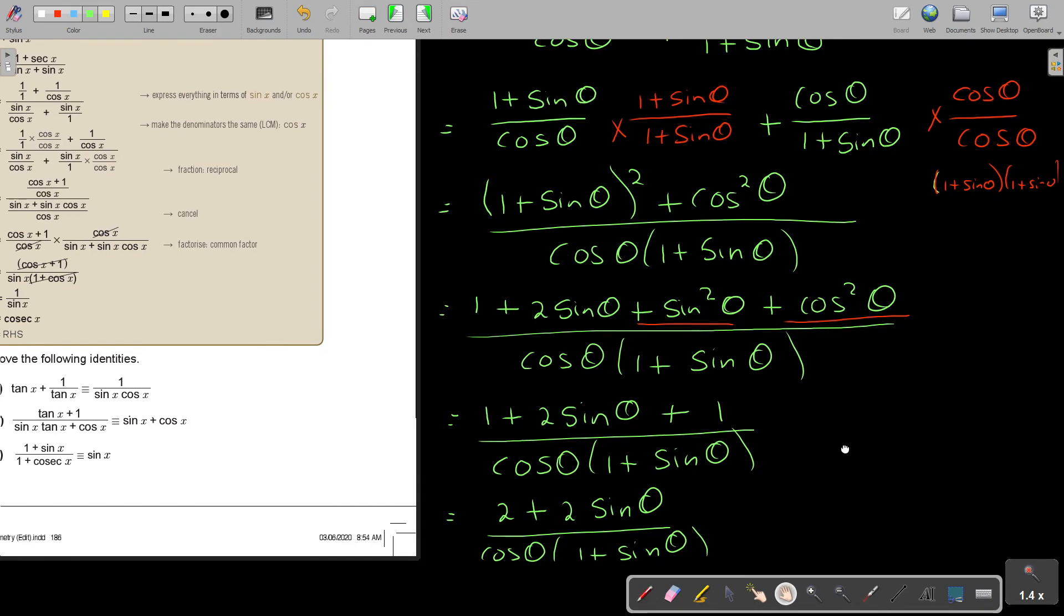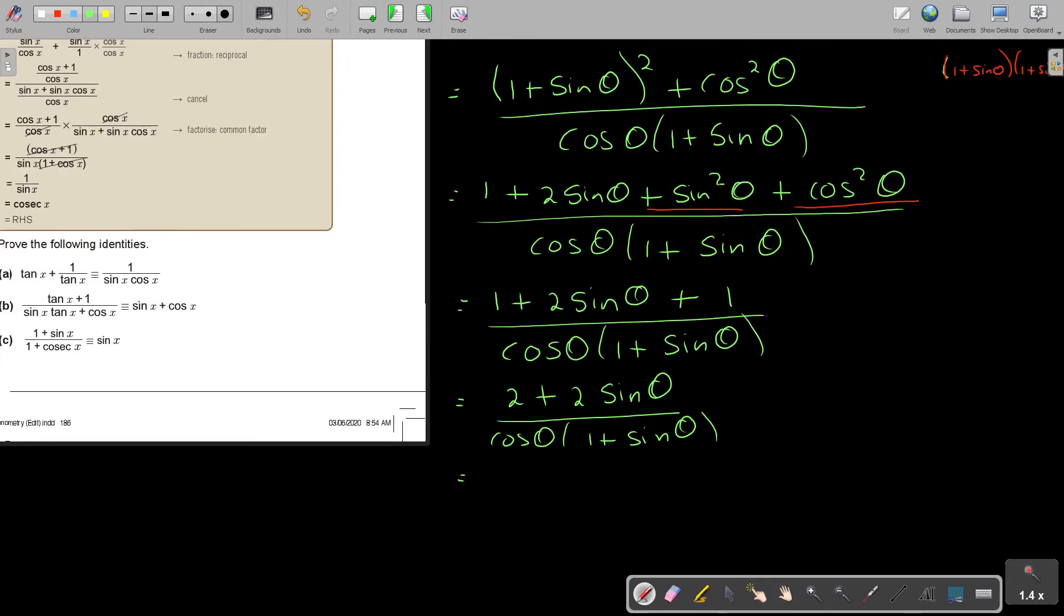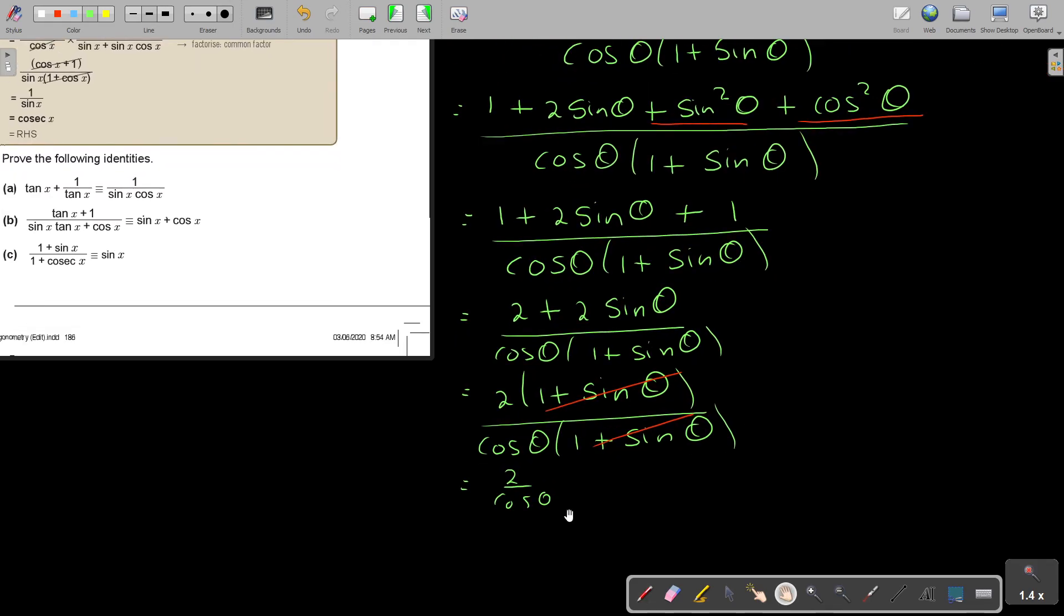I'm still going up. I take 2 out as a common factor. 1 plus sin theta over cos theta times 1 plus sin theta. And I cancel, cancel. And I'm ending up with 2 over cos theta, and I'm going to get 2. And if cos goes up, it's going to be sec theta.